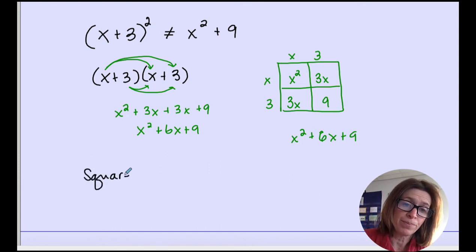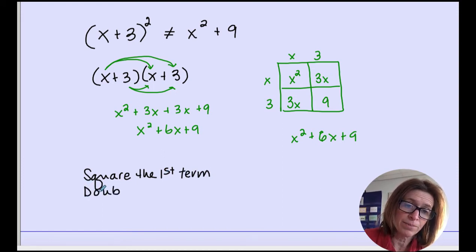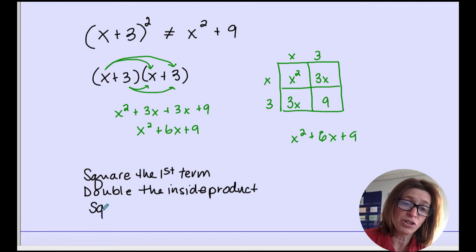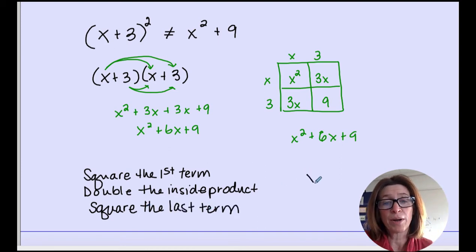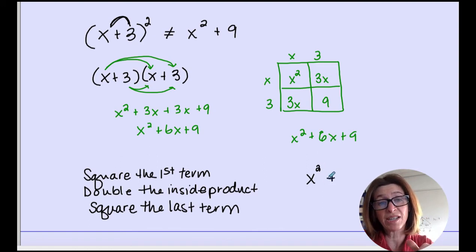Square the first term. Double the inside product. Square the last term. So that would be square the first term would be x squared. Double the inside product means 3 times x, which is 3x, and double that, so 6x. And then square the last term, which would be 9.